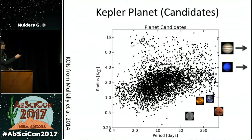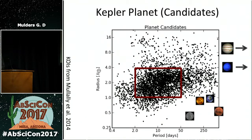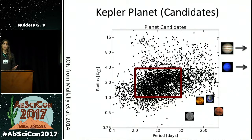What we see is a planet population with a typical orbital period of about 10 to 20 days, and a size ranging from slightly smaller than Neptune down to Earth-sized. The large question is: how do these types of planetary systems form, and how different is this from what we find in the solar system?